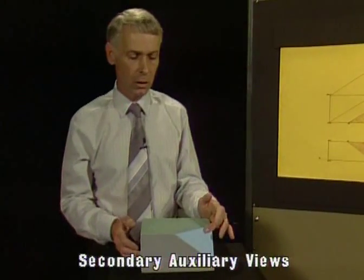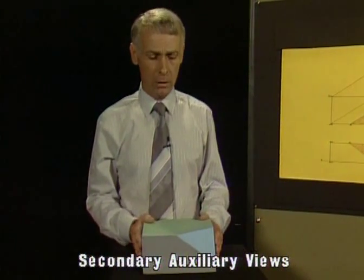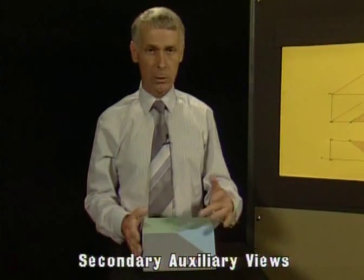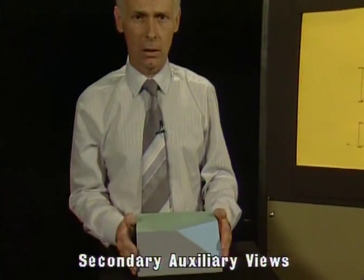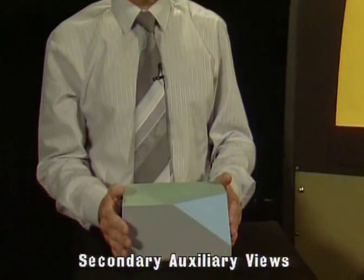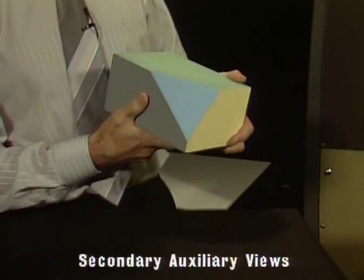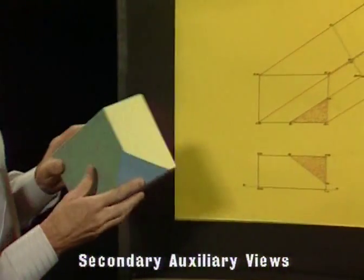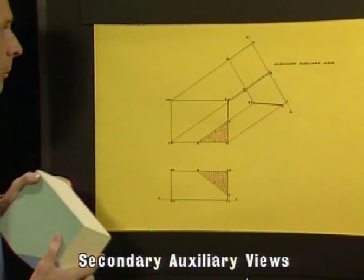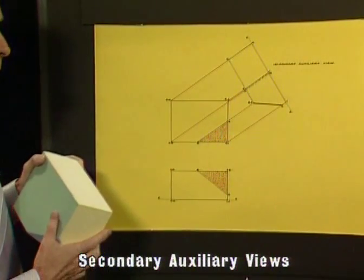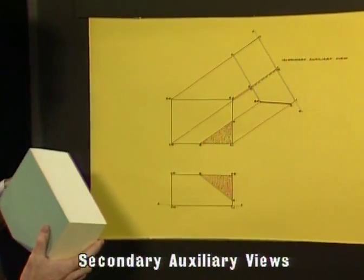Sometimes an object has a face which is not perpendicular to any of the principal planes on an object, and we need to see the true shape of that face. This is a difficult concept, so we're going to have to take this through slowly. First of all, we need to construct a view where that face is going into the picture plane. We've done this here with what they call a primary auxiliary view — I'd prefer to call it an intermediate view, because it has no relationship to the primary views we were discussing before.